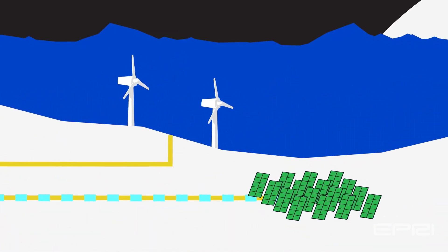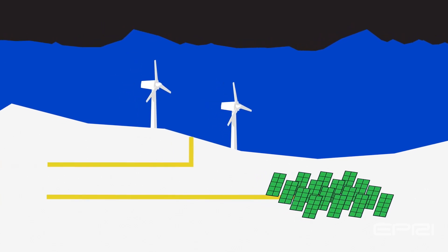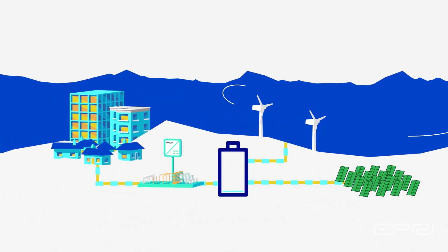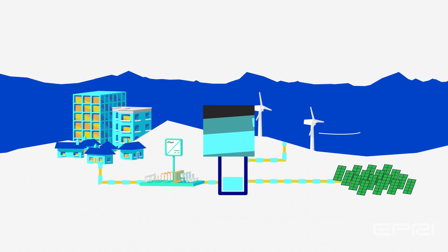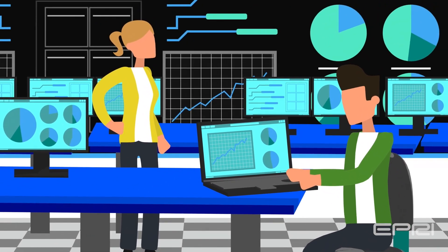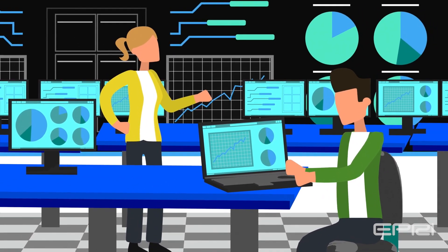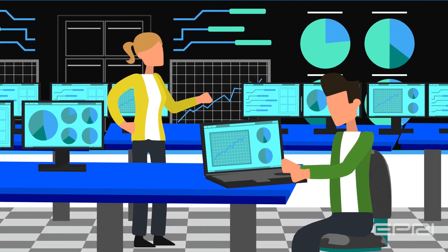Power systems need to ensure that homes and businesses have a reliable and secure supply of electricity when they need it. Today, engineers rely on resource adequacy assessments to make sure there's enough supply to meet customer demand.